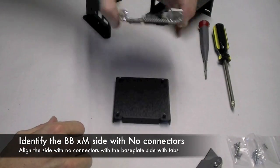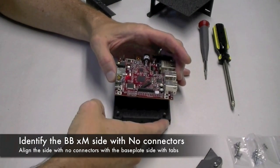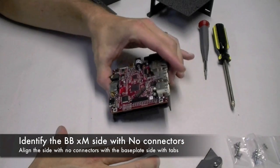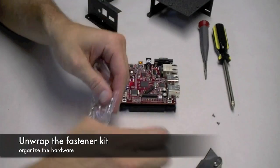Next, identify the side of the BeagleBoard that has no connectors. There's three sides that have connectors and one side that doesn't and you'll align the side that does not have any connectors with the side of the base plate that has the tabs.